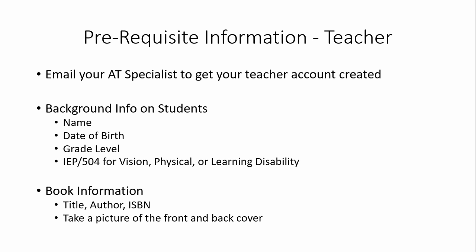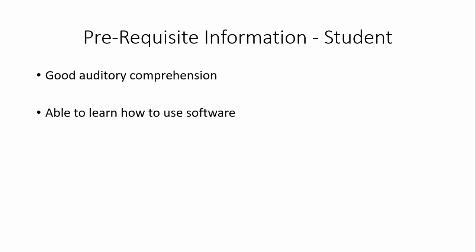To be efficient when creating accounts and assigning content, make sure you have all the necessary information to get started. For students, make sure you have their name, date of birth, grade level, and disability information. For assigning books, the best thing you can have is the ISBN number, followed by the title and author. The easiest way to do this is to take a picture of the front and back of the book.